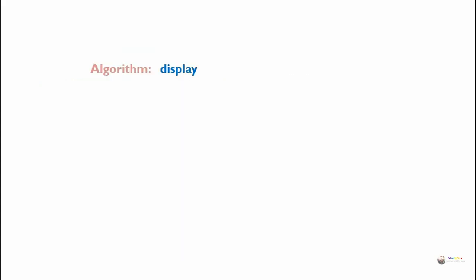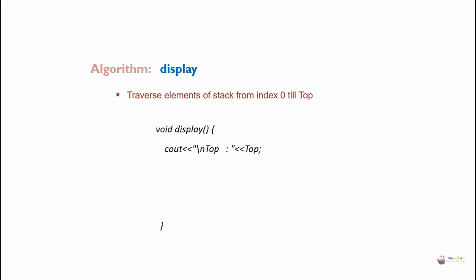Algorithm for display: it traverses the elements of the stack from index 0 till top. The algorithm is named display. First we display the value of top. Then, using a for loop with index i starting from 0 till top, we display the value of list of i. So each element from the stack, starting from index 0 till top, will get displayed.